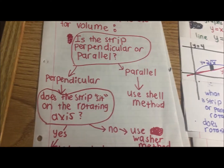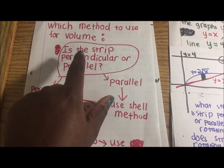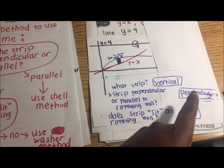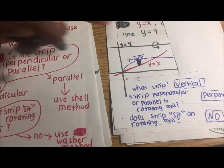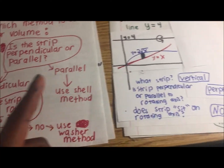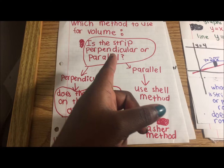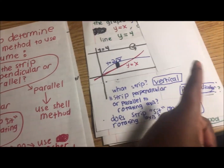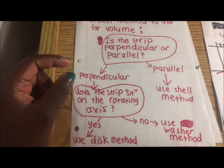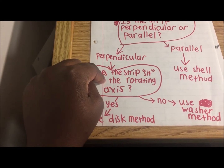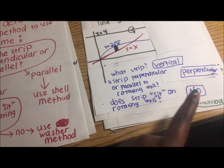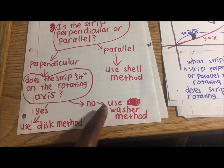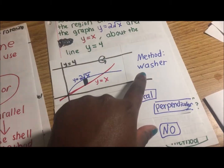Going back to the flowchart: the strip is perpendicular to the rotating axis, and no, the strip does not sit on the rotating axis. Therefore, we're going to use the washer method.